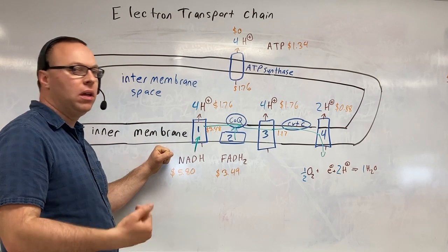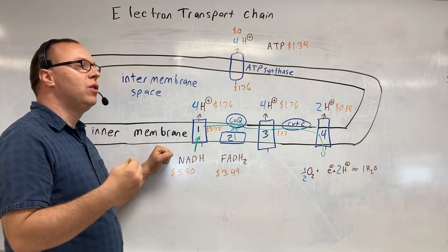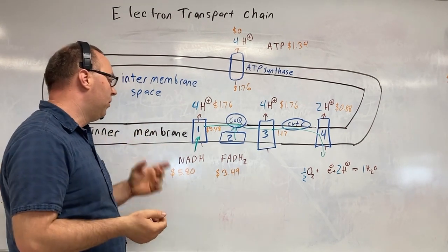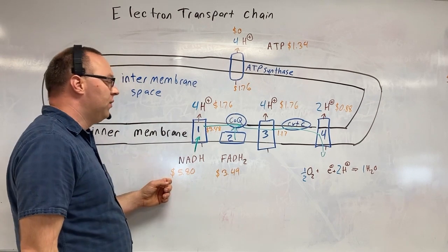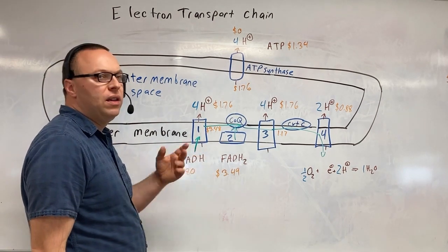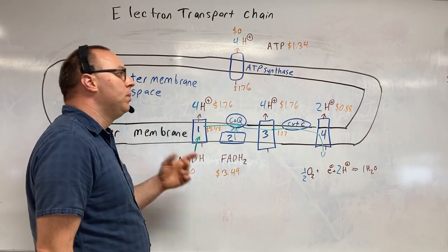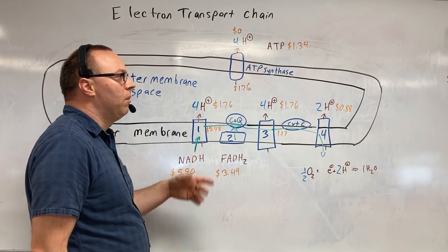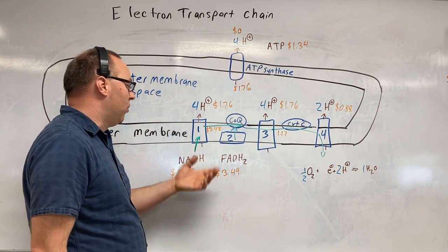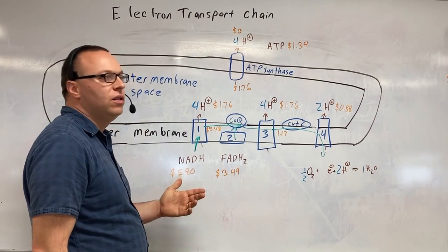We're going to have NADH coming in. Remember how with the first step of glycolysis, we ripped off two NADHs? We're going to have this feeding in here. We're going to have FADH feeding in. This is going to be from our other step right here with the Krebs cycle. We were ripping off NADHs and FADHs.